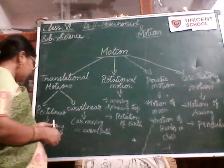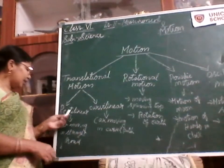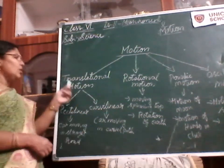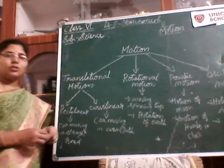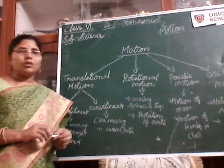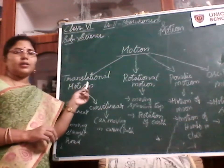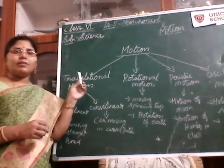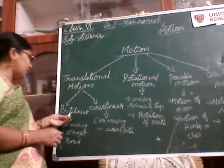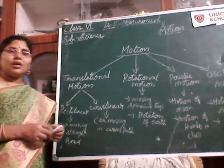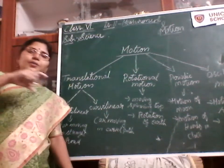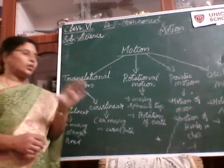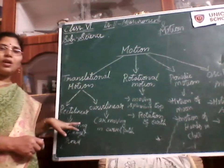The two categories are rectilinear motion and curvilinear motion. Rectilinear motion means the movement of an object on a straight path. There won't be any curves or bendings, only a straight path. The movement of an object on a straight path is called rectilinear motion.